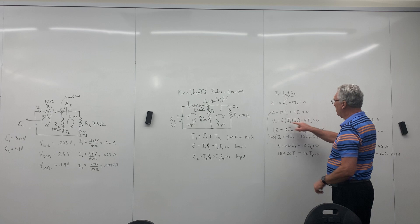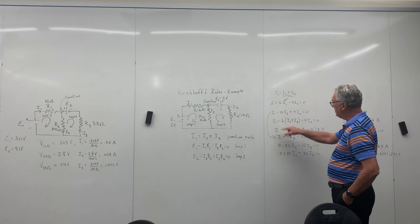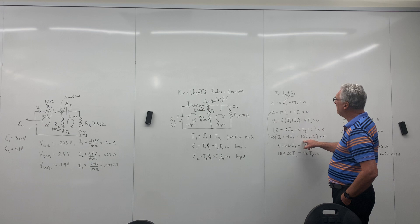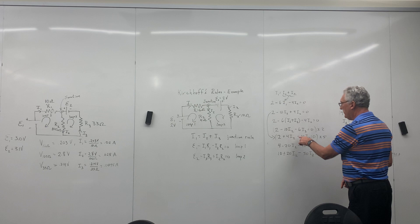What I'm going to do is replace I1 with I2 plus I3 here. Reorganize. I get two minus 10I2 minus 6I3 equals zero. And my second equation is still the same. Two plus 4I2 minus 10I3. Yeah, I just rearranged the I2 and the I3. Get them in the same order.